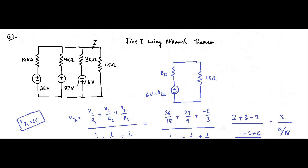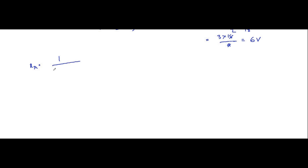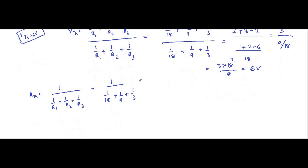Then we calculate RTH, which is R1 parallel R2 parallel R3. RTH equals 1 divided by (1/18 plus 1/9 plus 1/3) kilo ohms. The denominator is (1 plus 2 plus 6)/18 which is 9/18. So RTH equals 18/9, which is 2 kilo ohm. We have VTH equal to 6 volt and RTH equal to 2 kilo ohm.